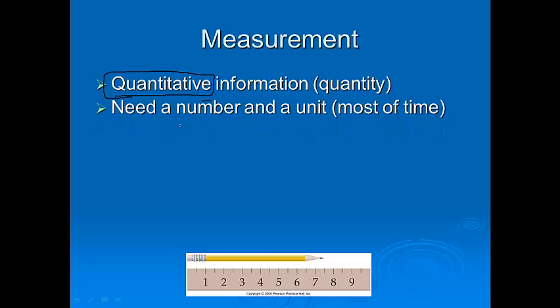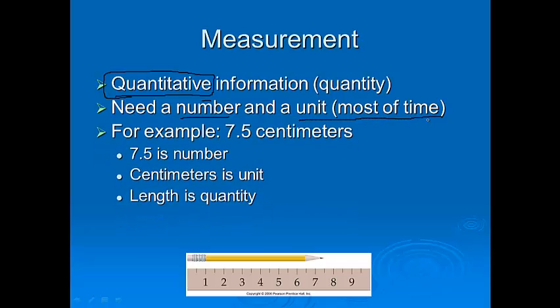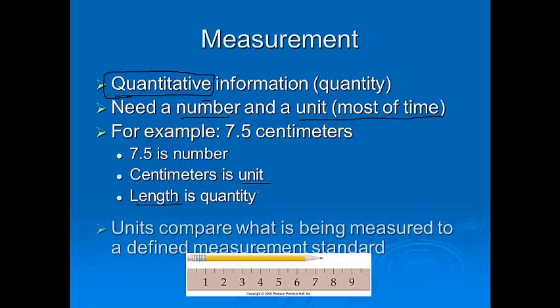Usually with measurement, you need a number and a unit. There are a few exceptions throughout the year that you won't need a unit, but for the most time, you do. For example, 7.5 centimeters, I know this should seem pretty obvious, but 7.5 is the number, centimeters is the unit, and then length is the quantity that we're measuring. So it's just another way of being specific on those.